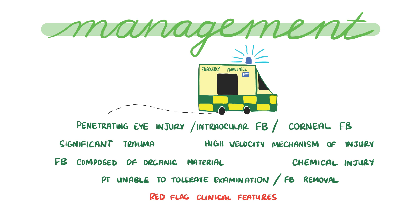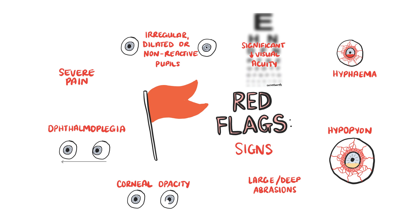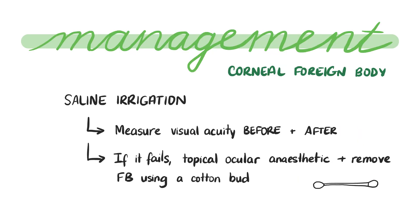Refer immediately if the mechanism of injury was high velocity with high risk of penetrating eye injury, if there is significant orbital or periorbital trauma, in chemical injury — although you must irrigate the eye immediately using saline for at least 20 minutes while awaiting transfer — if foreign bodies are composed of organic material, or if the patient cannot tolerate examination or foreign body removal in primary care, or if any red flag clinical features are present. If referral is not indicated and there is a superficial foreign body, you can remove it using saline irrigation once trained to do so. Measure visual acuity before and after removal. If saline irrigation fails, apply a topical ocular anaesthetic and remove the foreign body using a sterile cotton bud. Metallic foreign bodies may leave a rust ring requiring follow-up and removal by ophthalmology within one to two days.